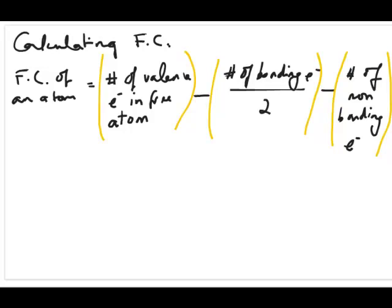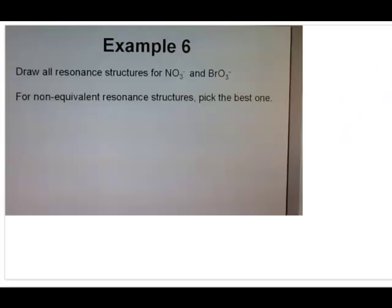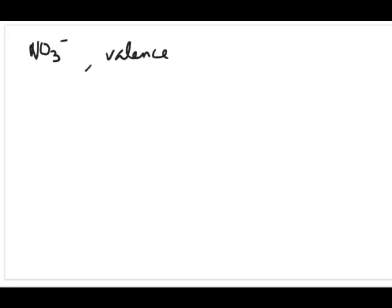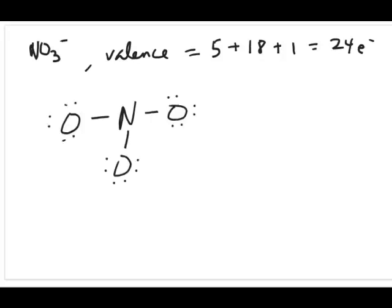Let's do a quick example taken from the lecture slide. The question asks you to draw all resonance structures for NO3⁻ and BrO3⁻, but right now we're just going to calculate formal charges. For NO3⁻, the first thing is to draw one Lewis structure. Nitrogen has 5 valence electrons, oxygen contributes 18, plus one more for the charge, giving 24 electrons total. Drawing the structure, you can see all 24 electrons are used up.